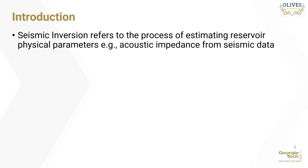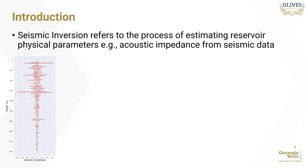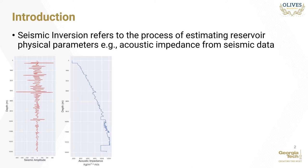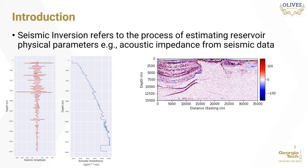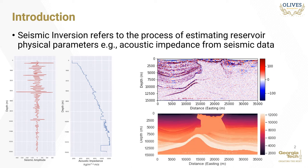Seismic inversion refers to the process of estimating reservoir physical parameters, for example acoustic impedance, from seismic data. Given the seismic trace as shown in the figure, we can invert it to obtain the corresponding physical property trace of the rocks. Inversion is usually performed on complete seismic sections or volumes. Given the seismic volume, one can perform inversion trace by trace to obtain the corresponding rock property volume.